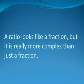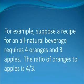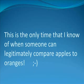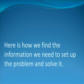A ratio looks like a fraction, but it is really more complex than just a fraction. It is a comparison of two things. For example, suppose a recipe for an all-natural beverage requires four oranges and three apples. The ratio of oranges to apples is four over three. In a ratio proportion problem, you must be given two ratios, although they may be disguised in the wording of the problem.